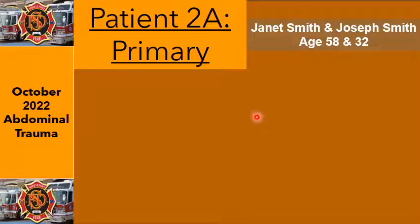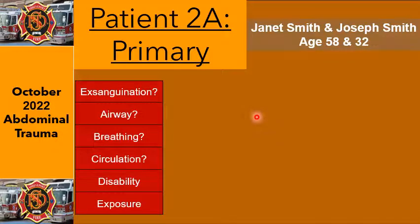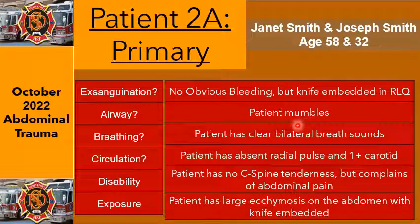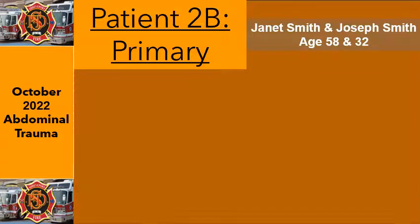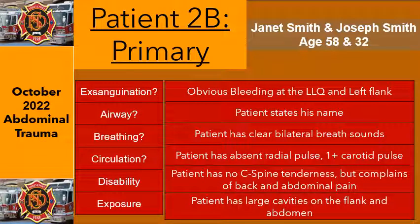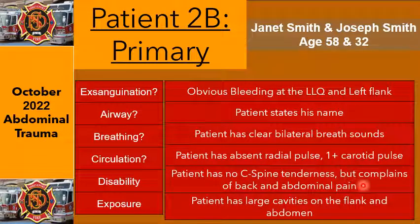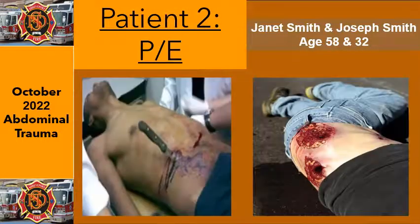Janet and Joe — remember PHTLS XABCDE: exsanguination, airway, breathing, circulation, disability, and exposure. Patient 2A, Janet: no obvious bleeding, but a knife is embedded in the right lower quadrant. She's mumbling, has clear bilateral breath sounds, absent radial pulse and 1-plus carotid — that means her blood pressure is low and she's probably bleeding internally. No C-spine tenderness but complains of abdominal pain with large ecchymosis on the abdomen. Joe has obvious bleeding at the left lower quadrant and left flank, states his name, clear bilateral breath sounds, absent radial pulse, 1-plus carotid, no C-spine tenderness, but has back and abdominal pain with large cavitary wounds on the flank and abdomen.